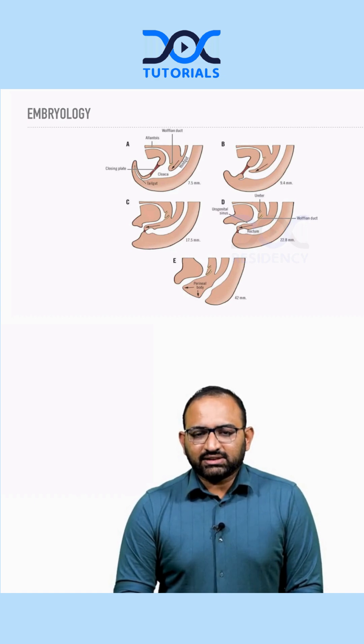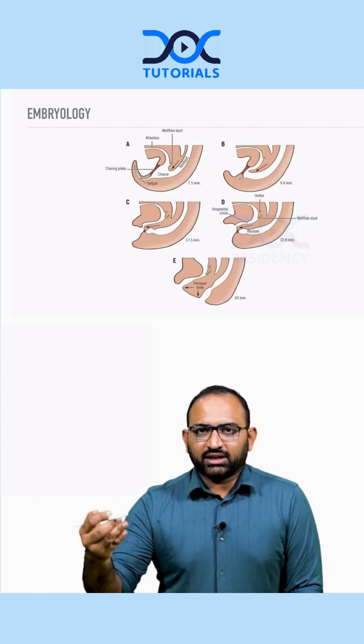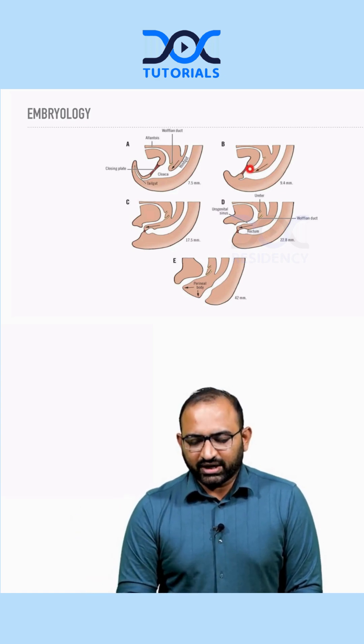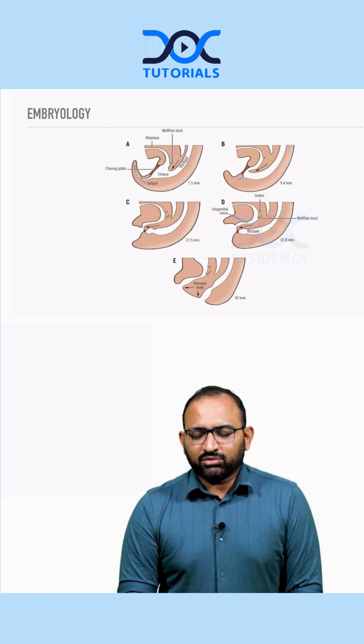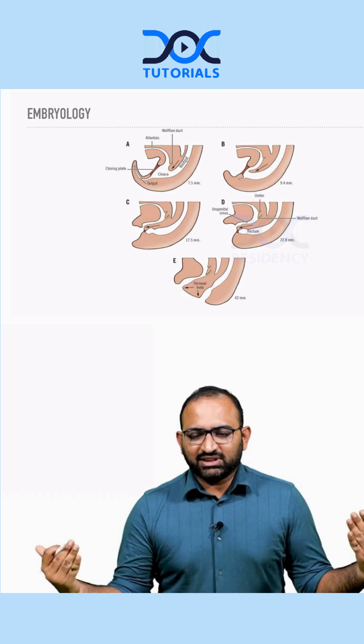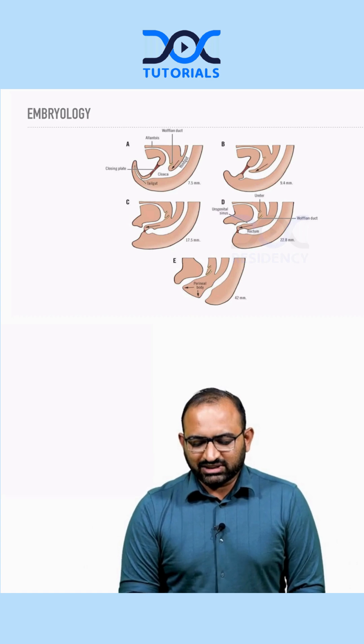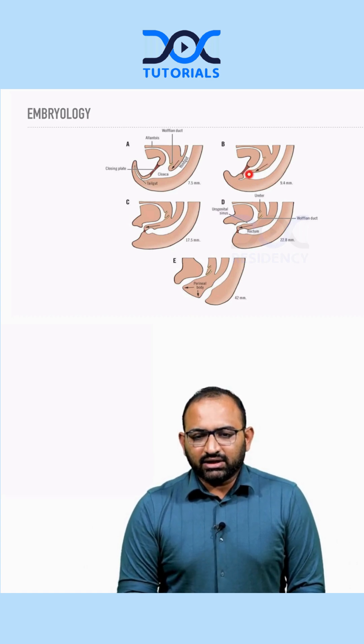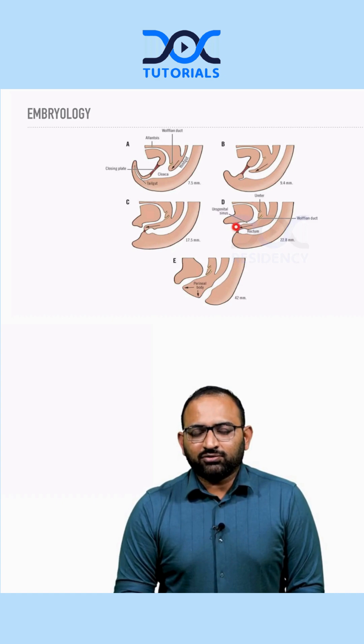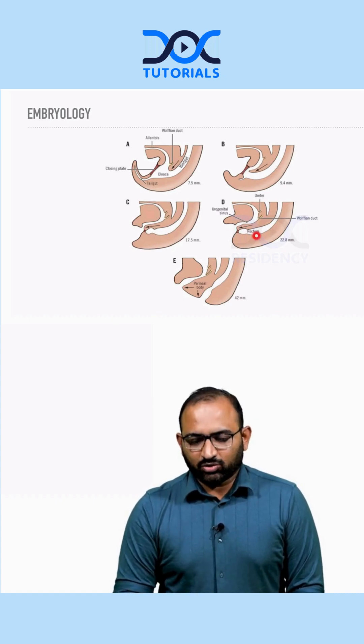As the child develops, the rectourethral plate divides the urinary tract from the rectum from the top down. It invaginates from the sides and from the top. Once the septum completely reaches the cloaca membrane, the cloaca membrane disintegrates and forms two separate openings: one for the urethra and one for the rectum.